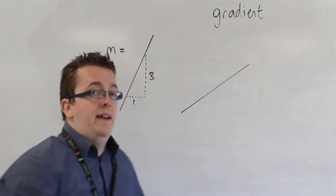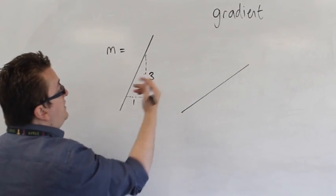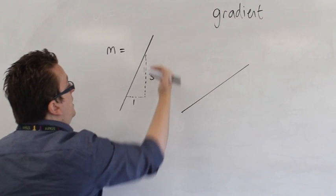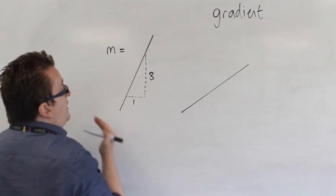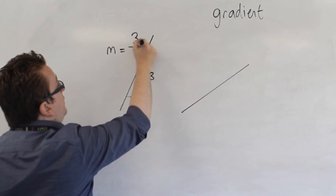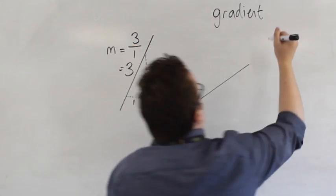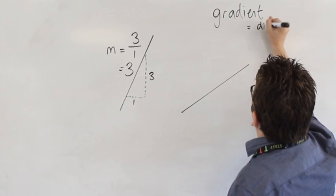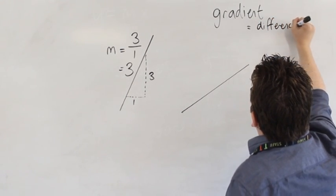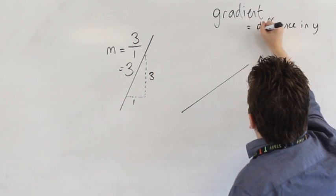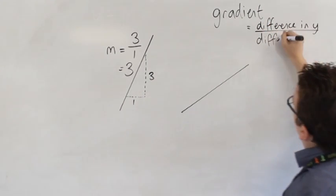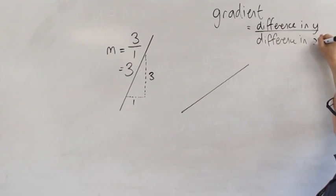And the way that we're going to be calculating it is by finding the difference in the Y coordinates divided by the difference in the X coordinates. So this is equal to the difference in the Y coordinates divided by the difference in the X coordinates.